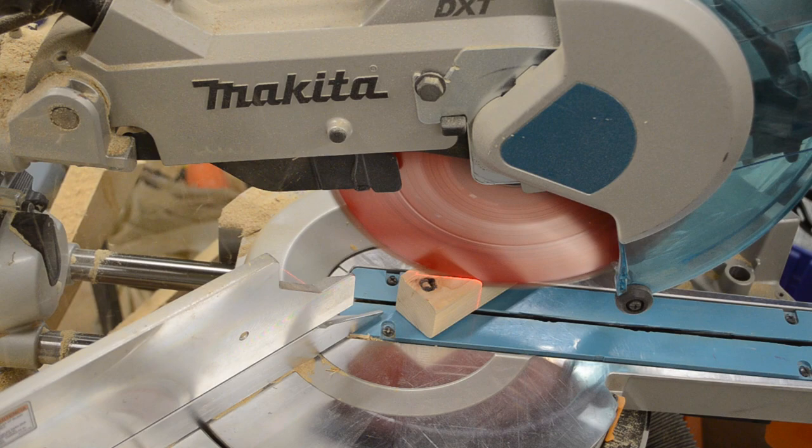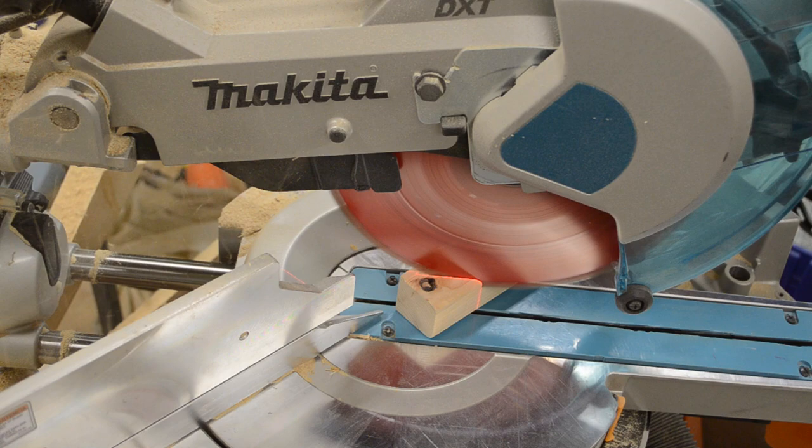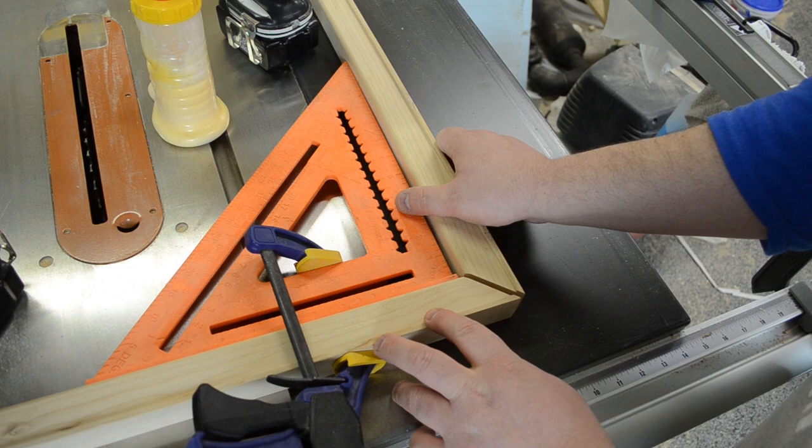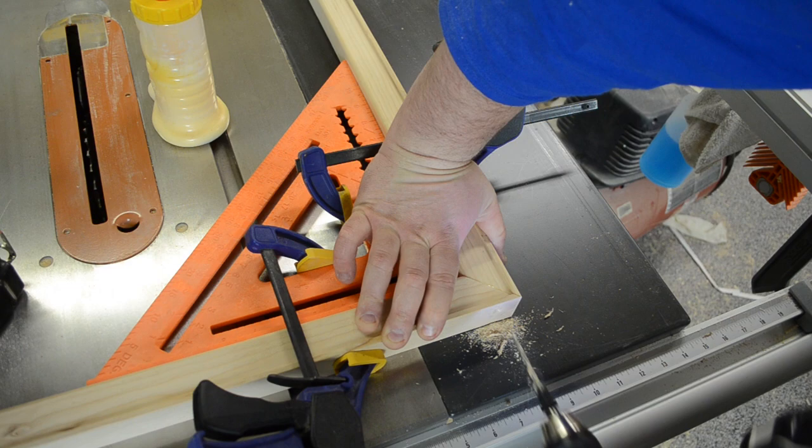Then I cut the frame pieces to 45 degrees as well. Using a speed square clamped to keep my joint 90 degrees, I added a little bit of glue to the joint and then I add a screw from either direction. I make sure to stagger the screws so they don't run into one another.